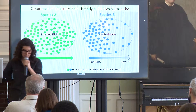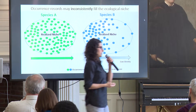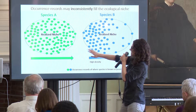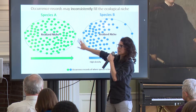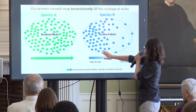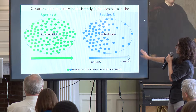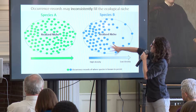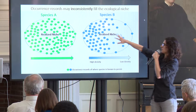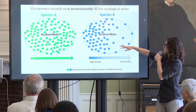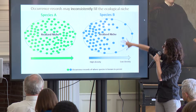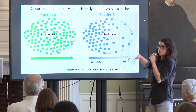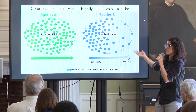These ecological niche models are very common approaches, but they have a major assumption: that the occurrence data we have is filling the species' niche completely. But in most cases — as we've seen with the Pinus ponderosa example — the data is sparsely distributed within that species' ecological niche. So there are portions of the niche that we think are suitable, but for a number of different reasons, we don't have observations for the species there.